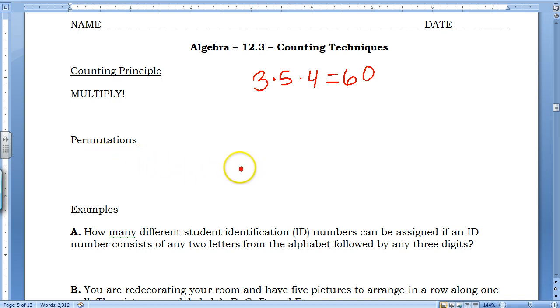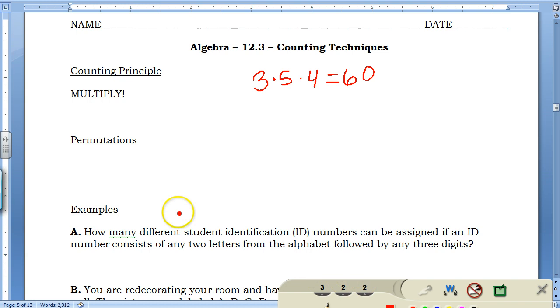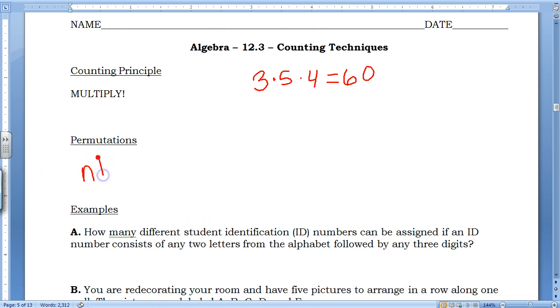Permutation is, let's say you had ten things and you wanted to use three of them, rather than using all of them, how many would there be? We have a special little symbol for that, nPr for permutation. So this is the number of things you have to choose from, and then how many of them you're going to use.